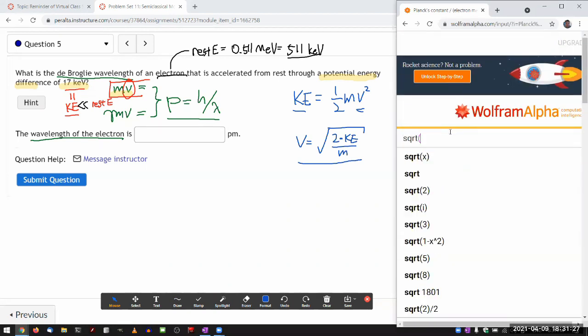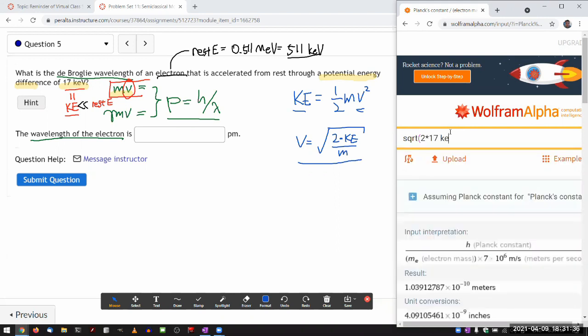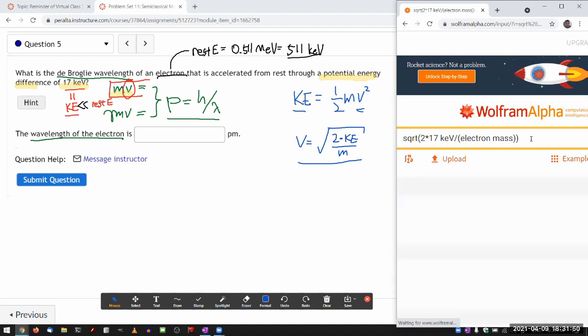So it's going to be square root of, and this is one of the things that are nice about Wolfram Alpha. It's aware of units. So I can just 2 times 17 keV. And I think Wolfram Alpha will just understand what I mean by this. Divided by electron mass.